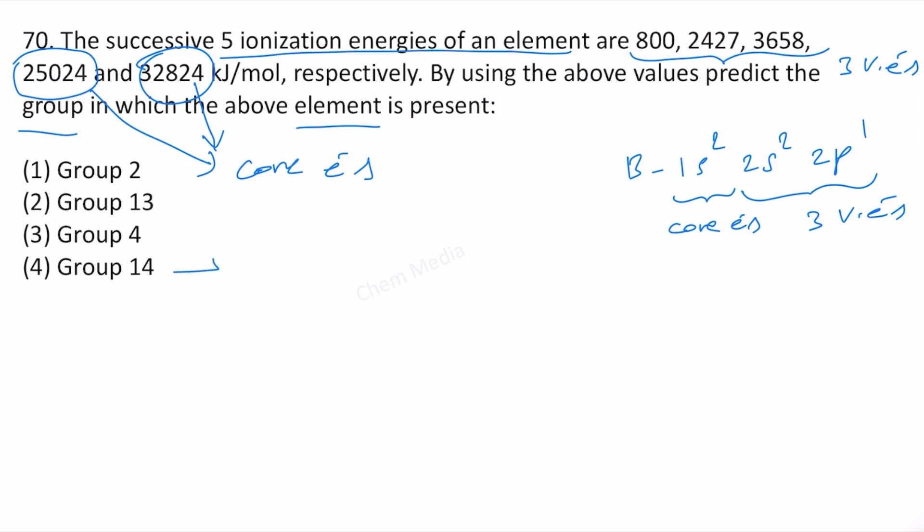We know that carbon belongs to group 14, and that means boron belongs to group 13. Boron, aluminum, gallium, indium—all those elements belong to group 13. Therefore, group 13 is the correct choice here, so option 2 is correct.